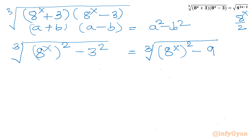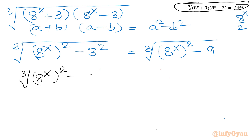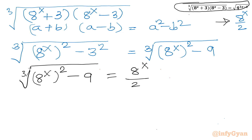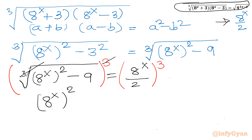Let us write our equation now: cube root of ((8^x)² − 9) = 8^x / 2. Now let us cube both sides. Cubing cancels the cube root on the LHS, so LHS becomes (8^x)² − 9, and RHS becomes (8^x)³ divided by 8.